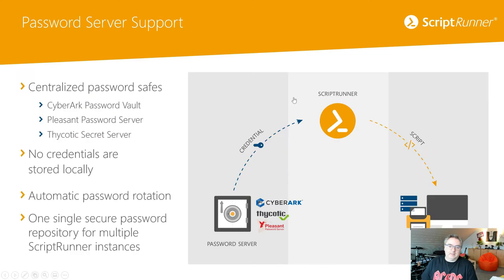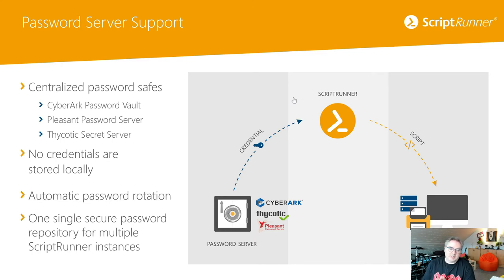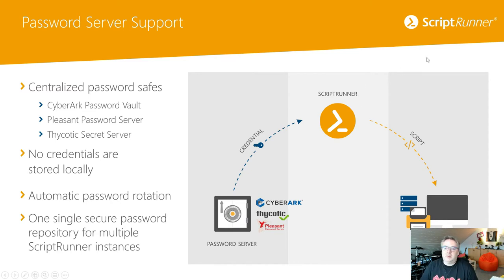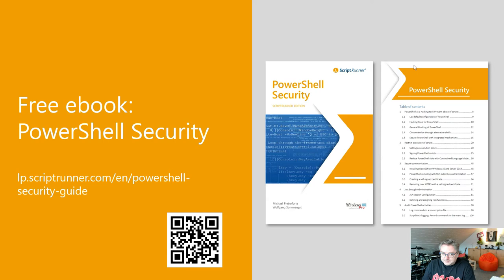This is one of the most important aspects: it becomes a truly secure way of working and delegating PowerShell. We also support password servers, so credentials don't have to be stored on the ScriptRunner machine — they can be stored in CyberArk, Password Vault, Pleasant, or similar tools. ScriptRunner retrieves credentials in real-time when a script needs to connect to Exchange, Office 365, Azure, or any back-end system. If you want to learn more about security and PowerShell, we have a free 140-page e-book available on our website covering all built-in security features.